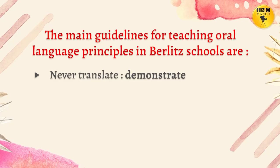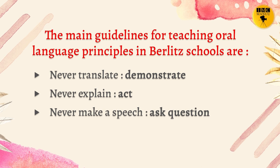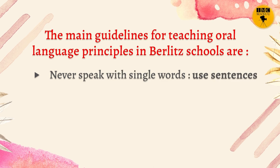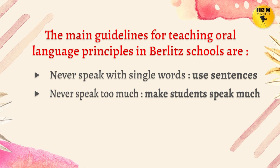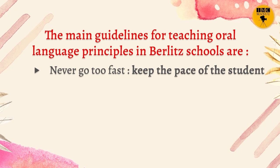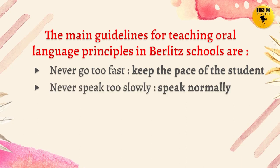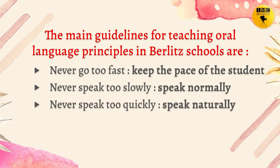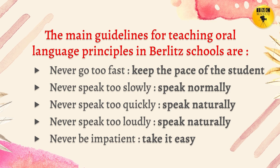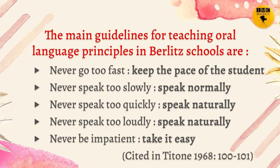The oral language principles in Berlitz schools are: Never translate, but demonstrate. Never explain, but act. Never make a speech — ask questions. Never imitate mistakes, but correct them. Never speak with single words — instead use sentences. Never speak too much — make students speak much. Never use the book — use your lesson plan. Never jump around — simply follow your plan. Never go too fast — keep the pace of the student. Never speak too slowly — speak normally. Never speak too quickly — speak naturally. Never speak too loudly — speak naturally. Never be impatient — take it easy. These are all the popular principles followed in Berlitz schools.